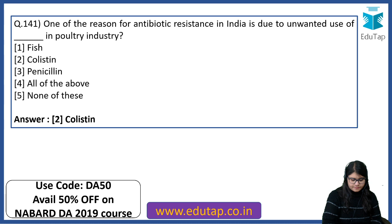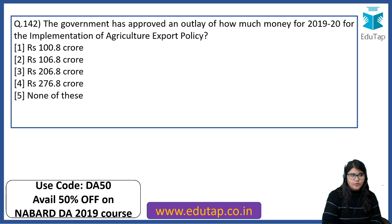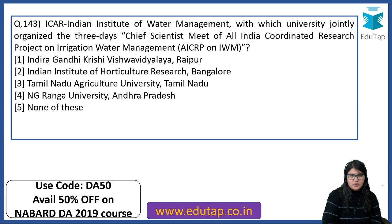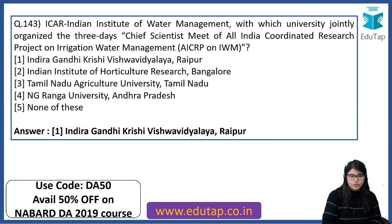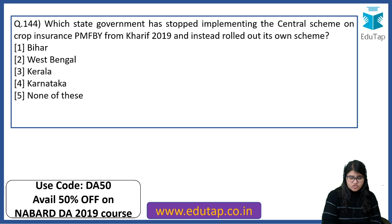The government approved an outlay of Rs. 206.8 crore for 2019-20 for implementation of the agriculture export policy. ICAR Indian Institute of Water Management, jointly with Indira Gandhi Krishi Vishwavidyalaya Raipur, organized a three-day chief scientists meet of the All India Coordinated Research Project on Irrigation Water Management. Which state stopped implementing the central crop insurance scheme PMFBY from Kharif 2019 and instead rolled out its own scheme? The right answer is West Bengal.